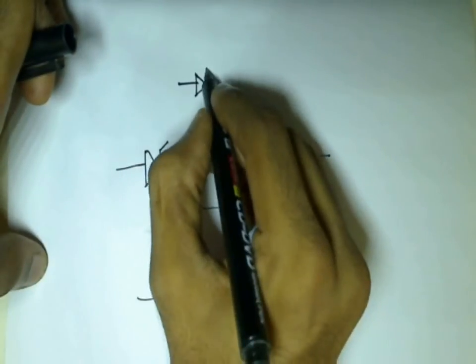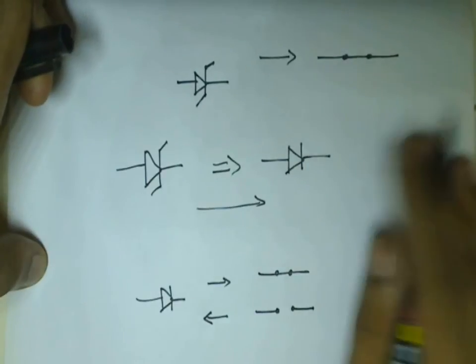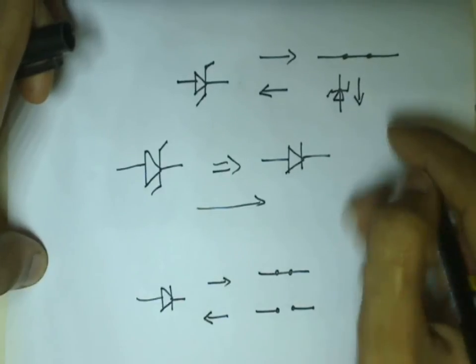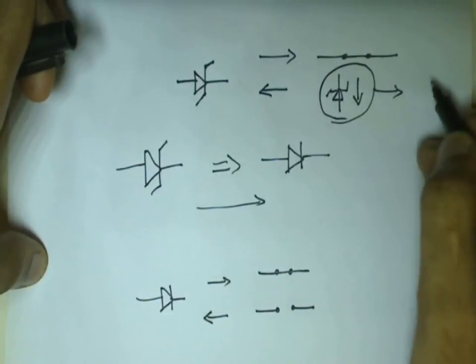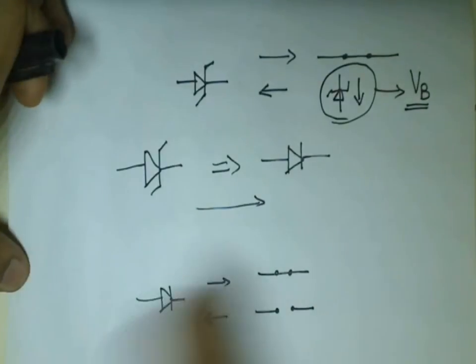Similarly, a Zener diode also functions as a short circuit in forward bias condition. In reverse bias condition, after the voltage across the Zener diode crosses the breakdown voltage, then the Zener diode starts conducting in reverse bias condition.